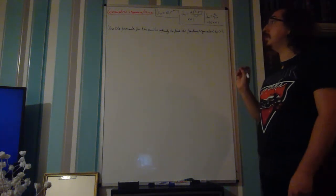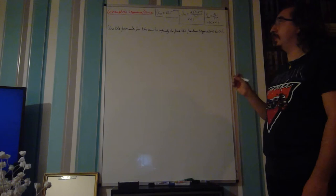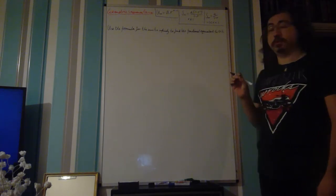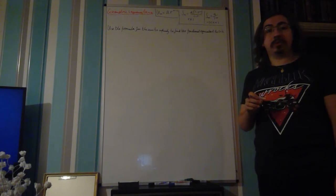For this problem we want to use the formula for the sum to infinity of the geometric series to find the fractional equivalent to 0.12 recurring.